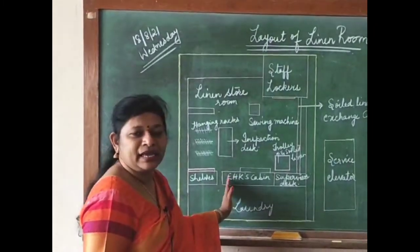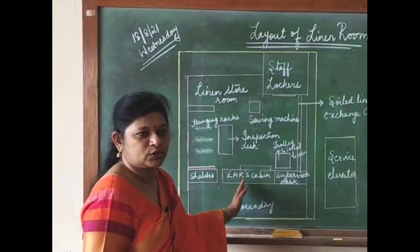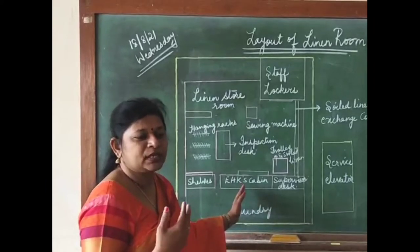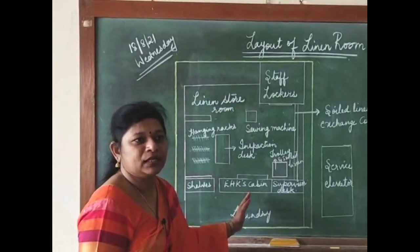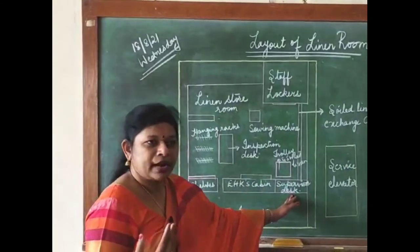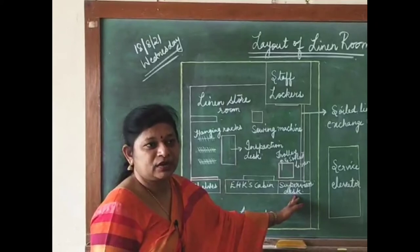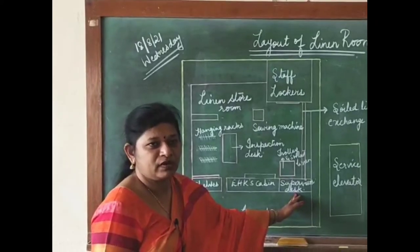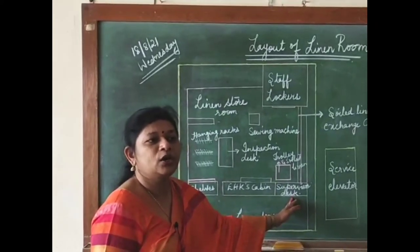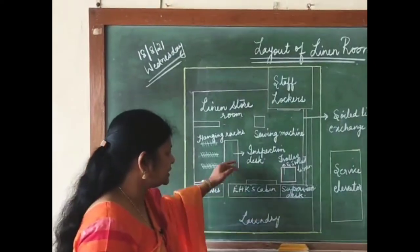Then you have shelves for storing linen, followed by the EHK's cabin — the Executive Housekeeper's cabin — which is located very close to the linen room so the supervisor can provide regular updates on what is happening in the linen room. As always, a workstation should be provided for the supervisor or manager for documentation and paperwork. This is the supervisor's desk.